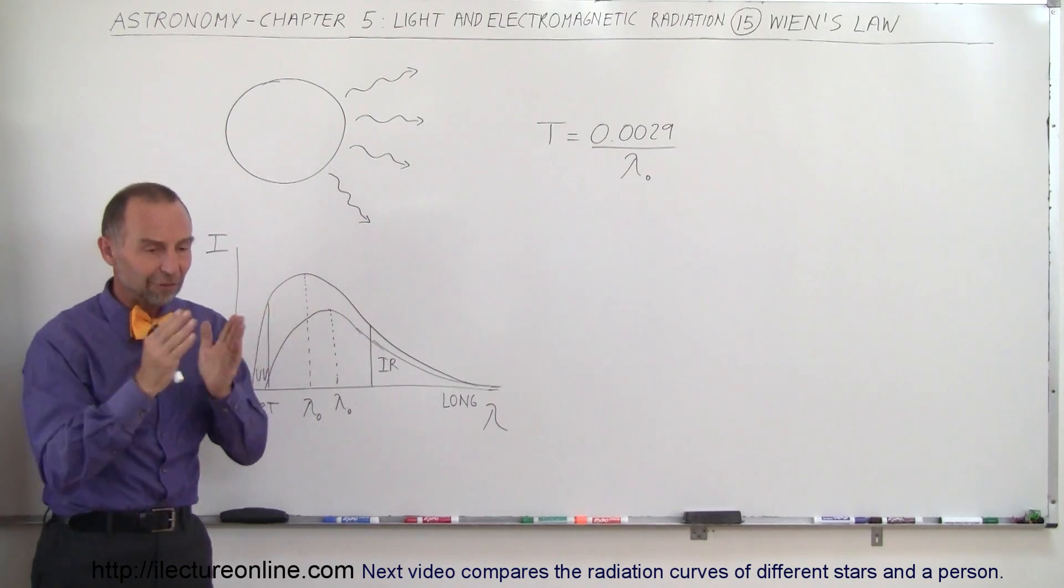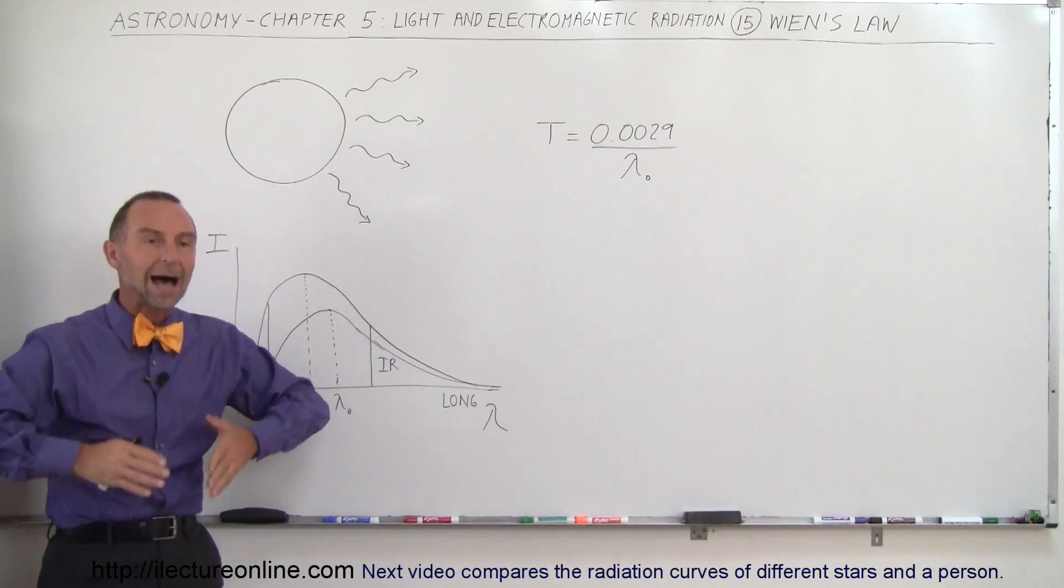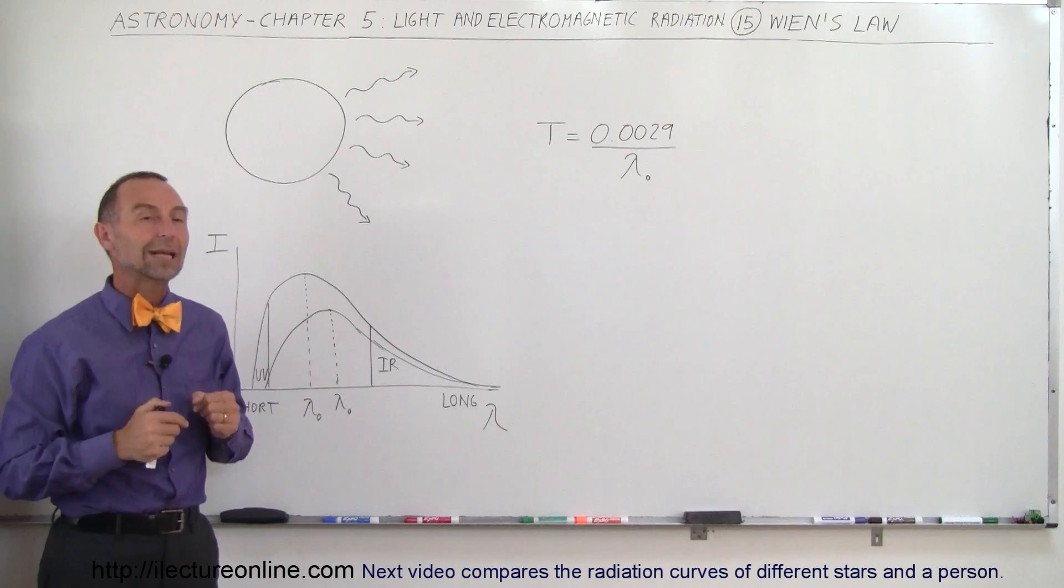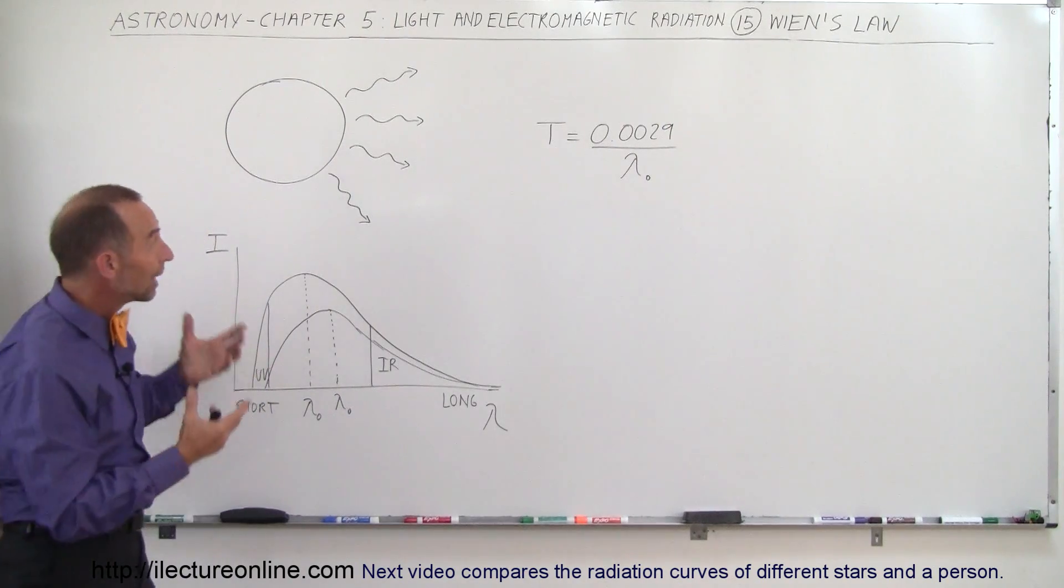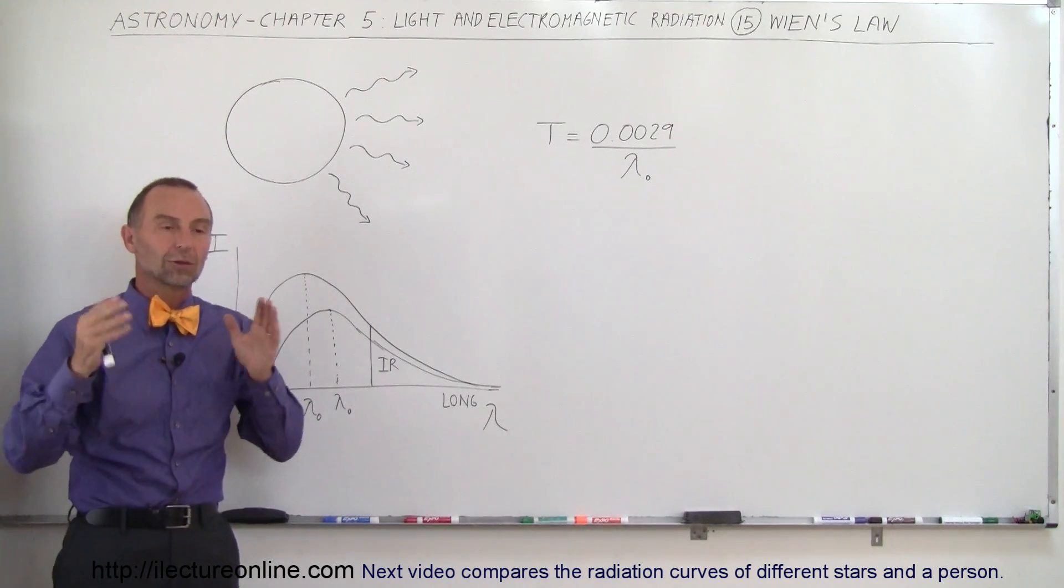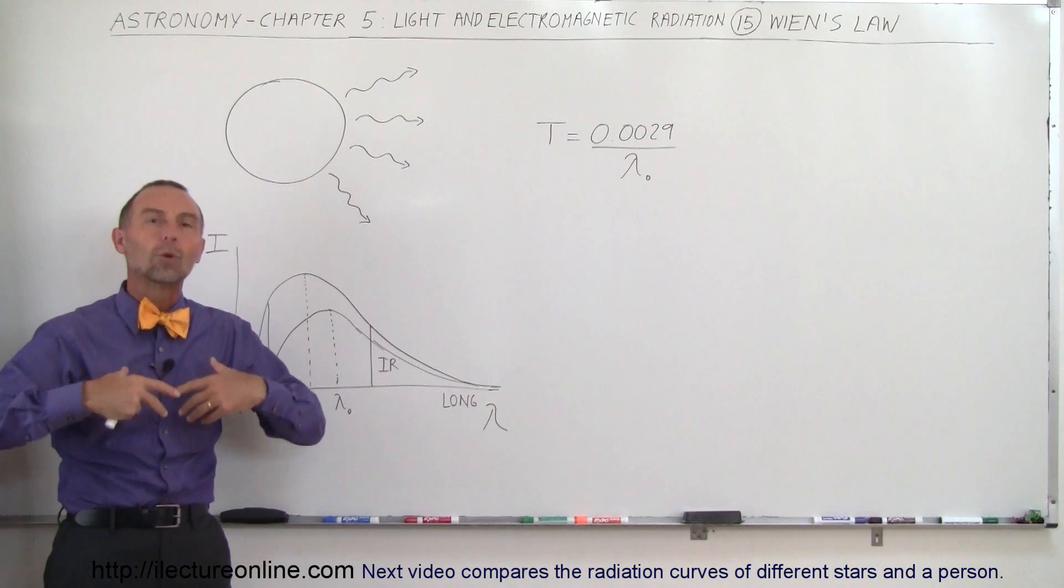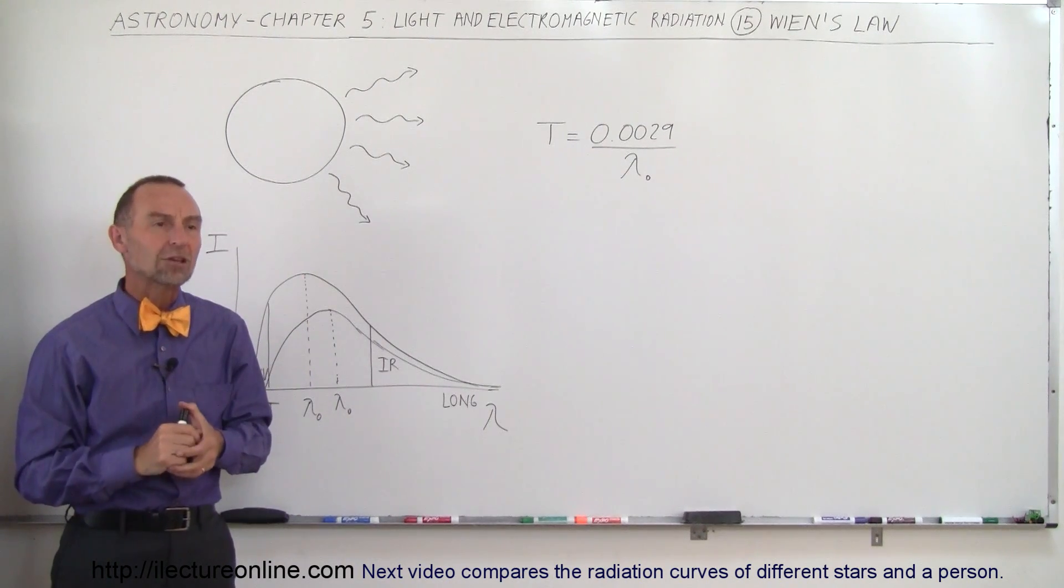The hotter an object, the faster the atoms vibrate, the higher the frequency of the electromagnetic radiation, the more energy it carries. And the cooler the object is, the slower the atoms vibrate, the lower the frequency of the electromagnetic radiation.